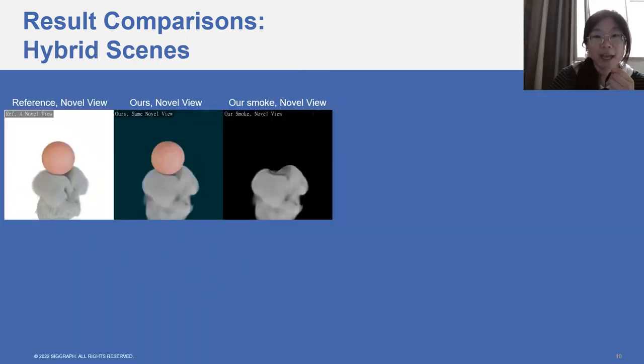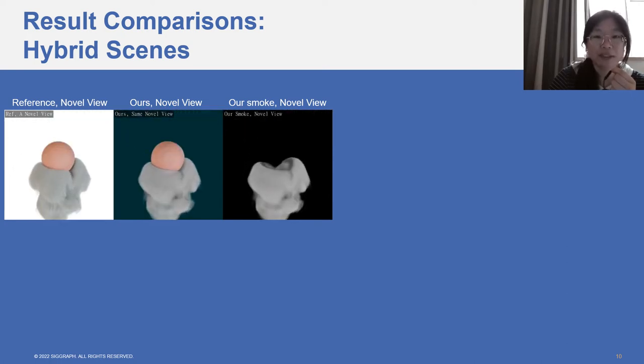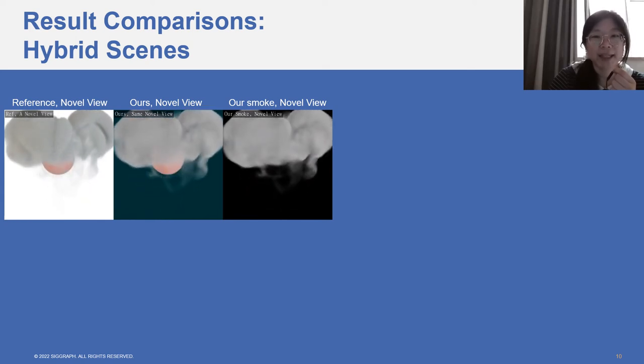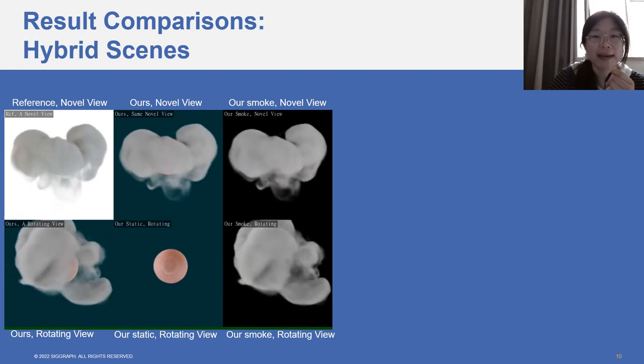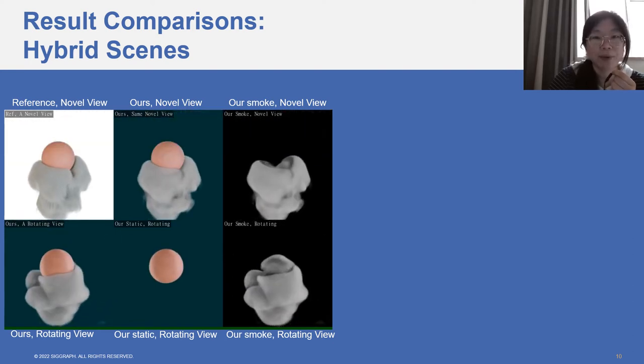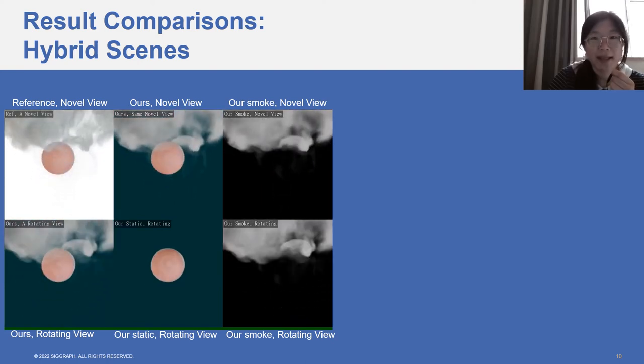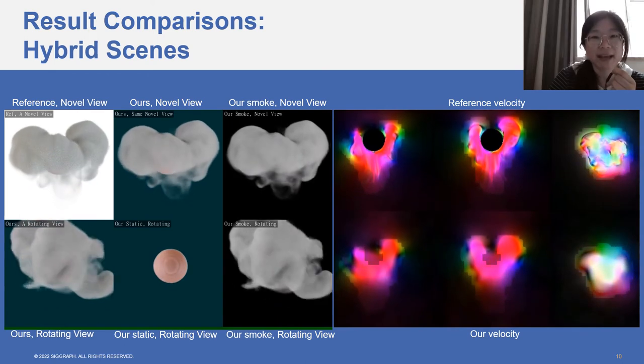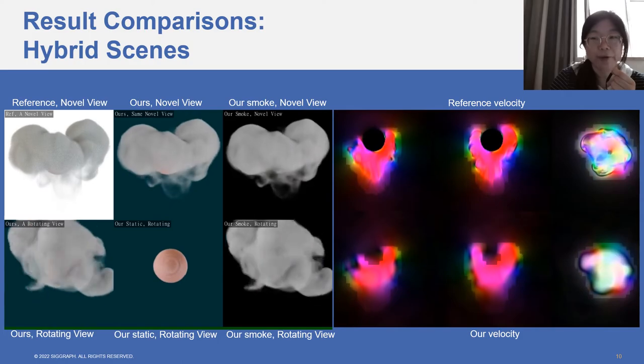In the following, we show more results on hybrid scenes with fluid and obstacles. The first scene is a regular one with a sphere obstacle. In the first row, we compare our results with the reference in a novel view. A rotating view is given in the second row. We can see that our model with a hybrid structure can separate the obstacle and the smoke successfully. In the velocity visualization from the front, side and top views, we can see that the velocity is reconstructed accurately.